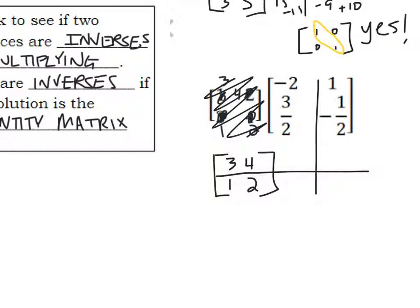3 times negative 2 is negative 6. 4 times 3 is 12 divided by 2 is 6. 3 times 1 is 3, minus 4 times 1 half would be 2. Negative 2, 2 times 3 is 6 divided by 2 is 3. 1 times 1 is 1, minus 1.